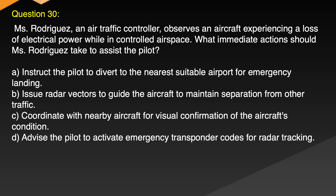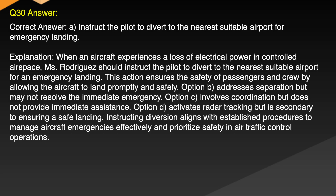Question 30. Emes Rodriguez, an air traffic controller, observes an aircraft experiencing a loss of electrical power while in controlled airspace. What immediate actions should Emes Rodriguez take to assist the pilot? A. Instruct the pilot to divert to the nearest suitable airport for emergency landing. B. Issue radar vectors to guide the aircraft to maintain separation from other traffic. C. Coordinate with nearby aircraft for visual confirmation of the aircraft's condition. D. Advise the pilot to activate emergency transponder codes for radar tracking. Correct answer: A. Instruct the pilot to divert to the nearest suitable airport for emergency landing.